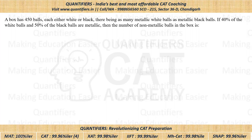Total balls are 450. Some of them are white, some of them are black. There are as many metallic white balls as metallic black balls. Further, it is also given that 40% of white balls and 50% of black balls are metallic. We have to find the total number of non-metallic balls.